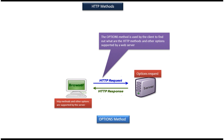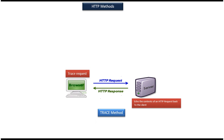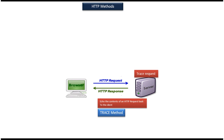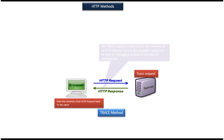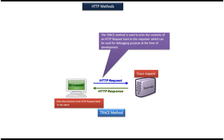Next we will see the TRACE method. The TRACE method is used to echo the content of the HTTP request back to the client. When an HTTP request goes from the client to the server, the server will echo the content of that HTTP request back to the client. This is mostly used for debugging purposes during development.